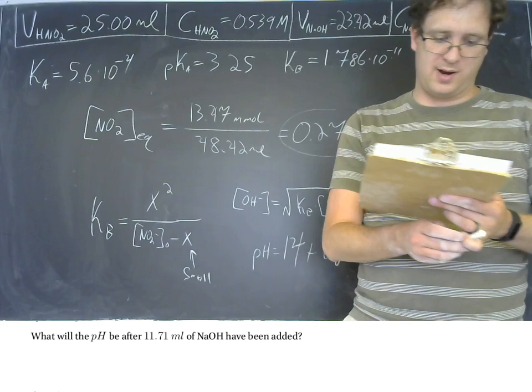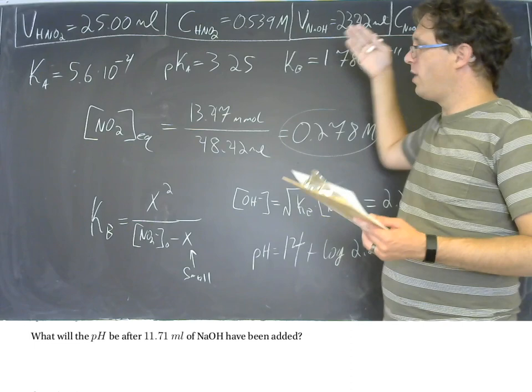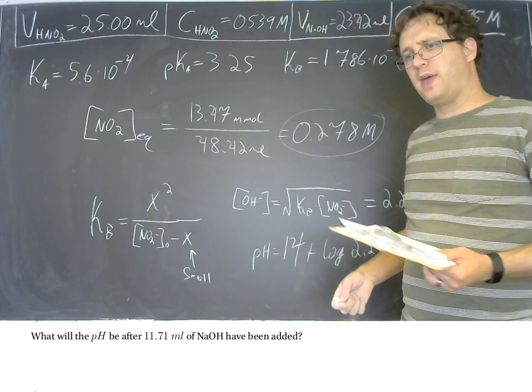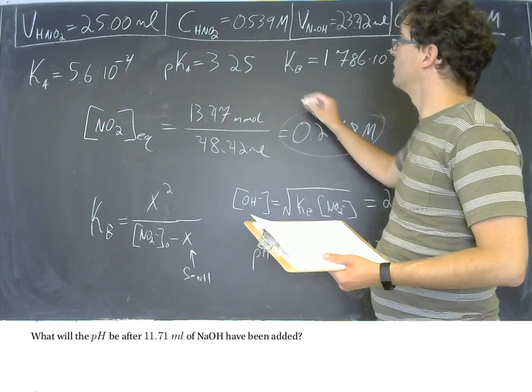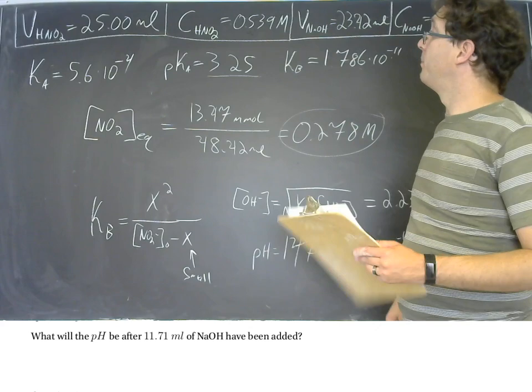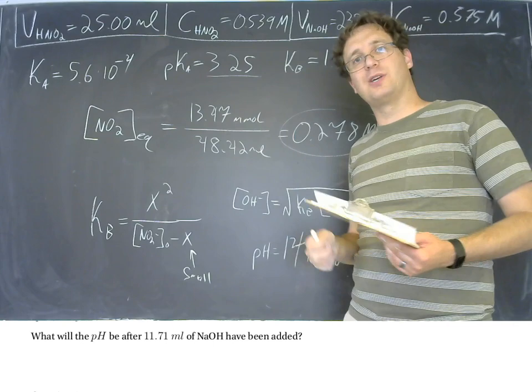What will the pH be after 11.71 milliliters of NaOH have been added? That is exactly one half of the equivalence volume, so we've converted exactly half our moles of nitrous acid into nitrite. Using the Henderson-Hasselbalch equation, when you have equal amounts of nitrous acid and nitrite ion, the pH equals the pKa. So the pH equals 3.25 — this is always the case for weak acid or weak base titrations when you reach precisely halfway to the equivalence point.